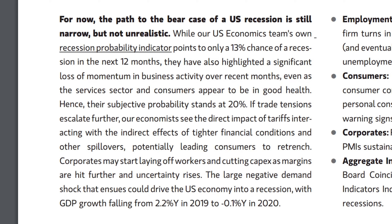Morgan Stanley's probability indicator, looking at all current data points, gives a 13% chance of a recession in the next 12 months. They also highlight other concerns that can't be tied into data points, and say subjectively the risk is more around 20% in the next 12 months. Just with pure data points, they think it's around 13%. With other things outside of what you can quantify — like tariffs and concerns about that — they peg it around 20%. So Morgan Stanley's range for recession within the next 12 months is somewhere between 13% and 20%.